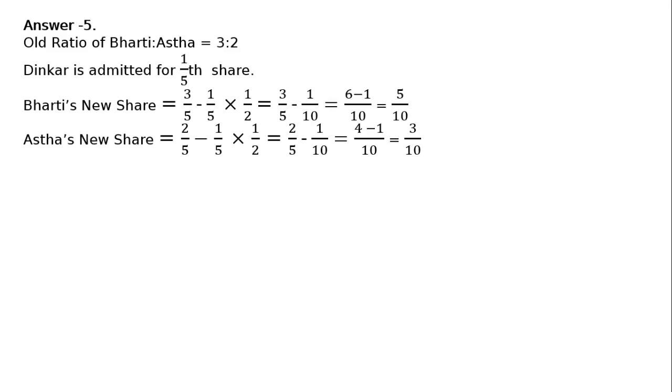Astha's new share: 2 upon 5 is the old share minus 1/5th multiplied by half, equally taken from Bharti and Astha. That is 2 upon 5 minus 1 upon 10, that is LCM 10, 2 to 4 minus 1, that is 3 upon 10. Dinkar's new share is equal to 1 upon 5 multiplied by 2 upon 2, that is equal to 2 upon 10.